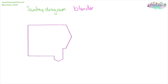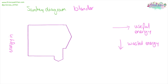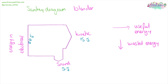When we want to visually show the efficiency of something, we can use a Sankey diagram. On one side we have the energy going in, one direction shows the useful energy, and another direction shows the wasted energy. In this example of a blender, electrical energy goes in, kinetic energy is the useful output, and sound energy is the wasted output. On graph paper, 20 squares could represent 20 joules input, 15 squares 15 joules useful, and 5 squares 5 joules wasted. Make sure to count squares or sketch it roughly in proportion.